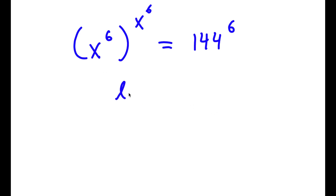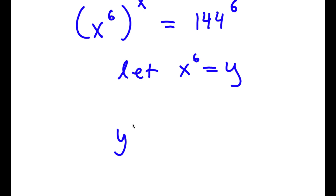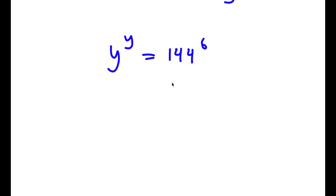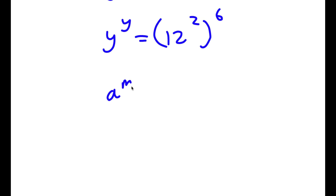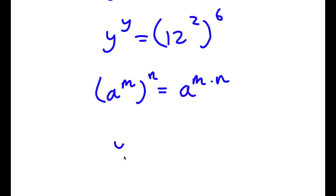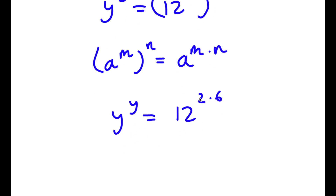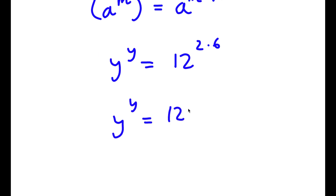Now I'm going to let x to the power of 6 equal to the variable y. So if I replace x to the power of 6 with y, I get y to the power of y is equal to 144 to the power of 6. Now 144 is the same thing as 12 to the power of 2. So substituting, I get 12 to the power of 2 to the power of 6, which equals 12 to the power of 2 times 6, which is 12 to the power of 12.